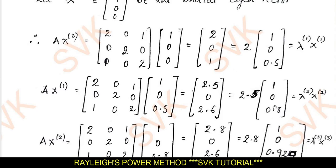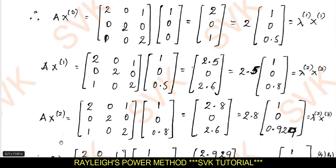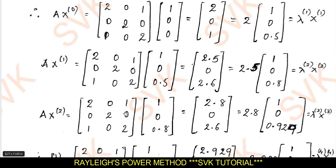We continue these iterations until we get the same approximation. Moving on to the next iteration, I find Ax₂ — that is, multiplying the given matrix A with eigenvector x₂. We get a new matrix: [2.8, 0, 2.6]. Out of these 3 elements, 2.8 is the largest value. We divide this matrix by 2.8, getting 2.8 times [1, 0, 0.929].